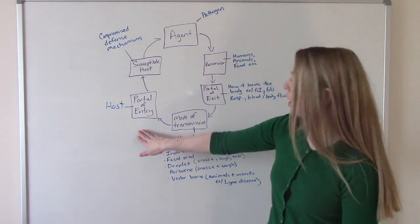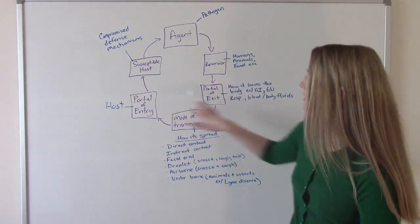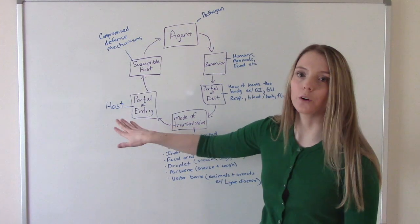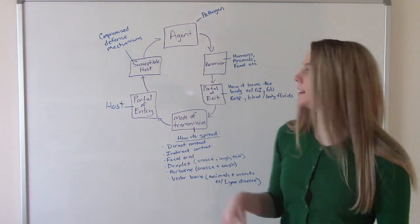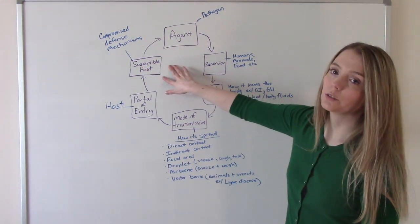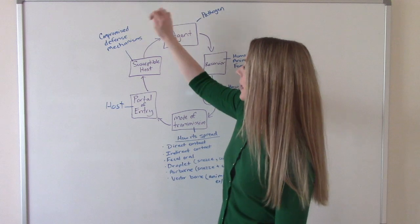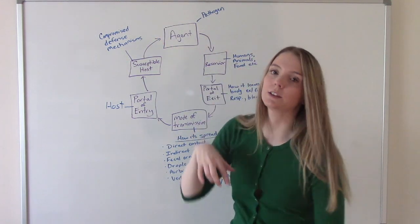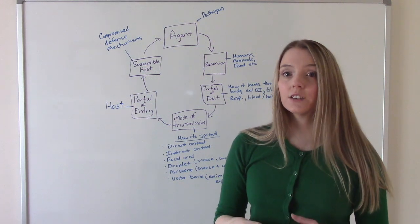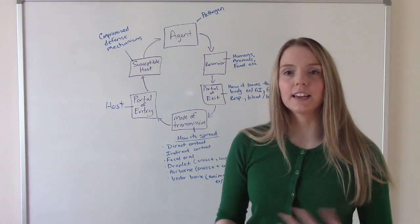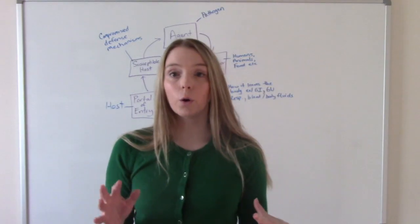After it's been transmitted, we need a host, which is our portal of entry. Sometimes the portal of entry and the portal of exit can be the same. Maybe it enters through the skin or through blood or body fluids or the GI tract, and it could also be the same way it exits. And then we need a susceptible host, somebody who's more likely to get this infection. Anybody who's compromised - compromised defense mechanisms due to immunosuppression, medications, or literally anybody with a break in their skin like a cut, scrape, or wound.